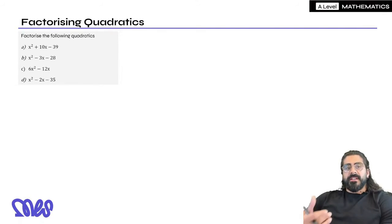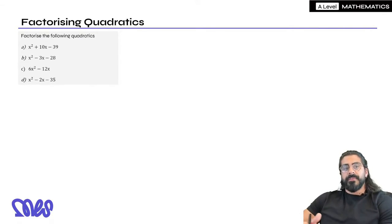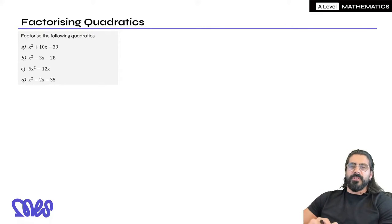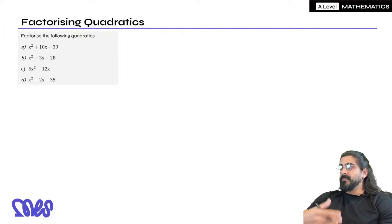Quadratics means the largest power of x is 2. Now there are different types of quadratics you can have. At GCSE we focus on things like x squared, then an x term, then a number.